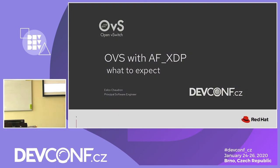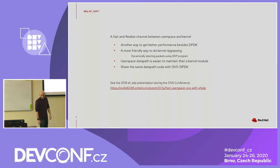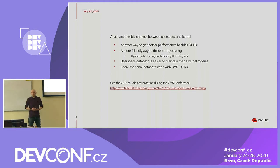My name is [speaker], I work for Red Hat, and this talk is about the addition of AF-XDP as a data path for Open vSwitch. It's not really going into the details of what AF-XDP is and does, but in short, it's an enhancement that will allow packets to be sent directly to user space, similar to DPDK.